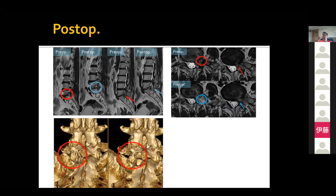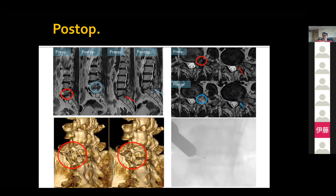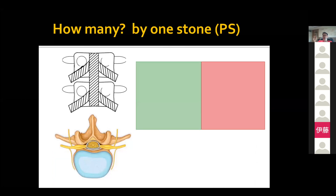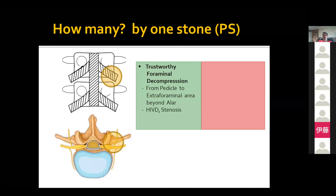Unfortunately, the operative video was not well acquired. The well-decompressed foramen and exiting root at L5-S1 were confirmed, and the lateral recess disc herniation was successfully removed. Intraoperatively it was confirmed that approaching the spinal canal was difficult via the paraspinal approach compared to the transforaminal approach — with the transforaminal approach, the intraspinal pathology is easily recognized. How many pathologies can you address by the paraspinal approach? I think the paraspinal approach is the most important tool for decompressing the foraminal area from the intraforaminal to the extraforaminal area.